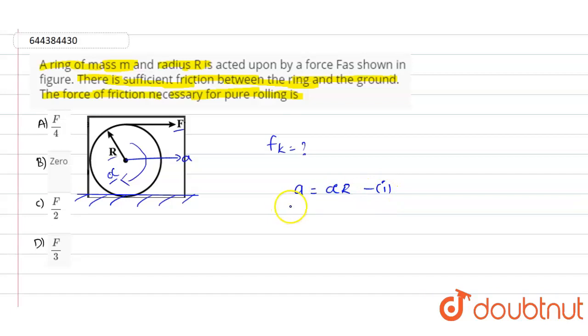And force F minus fk, that means frictional force, will be equals to mass into acceleration. Let us suppose this as equation number two.